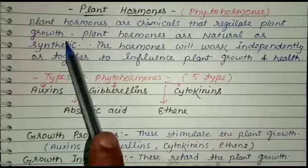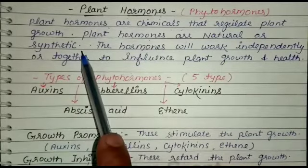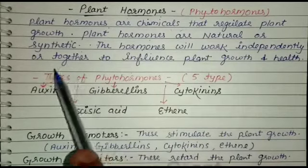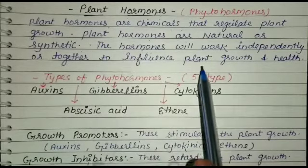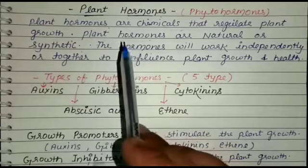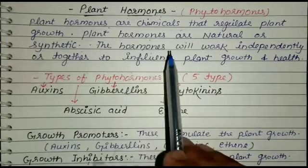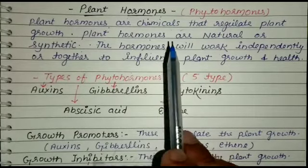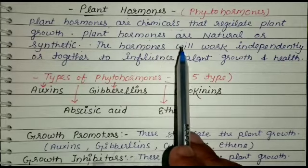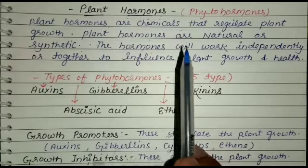Plant hormones are chemicals that regulate plant growth. Plant hormones can be natural or synthetic. The hormones will work independently or together to influence plant growth and health. Plant hormones coordinate the activity of the plant by controlling one or the other aspect of its growth.